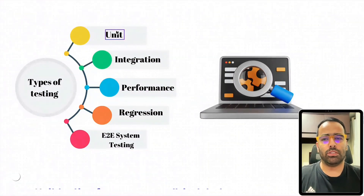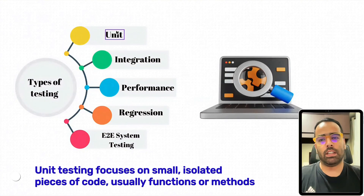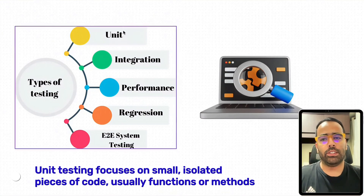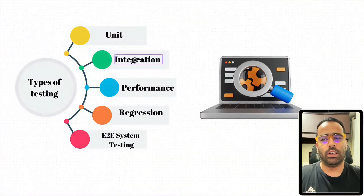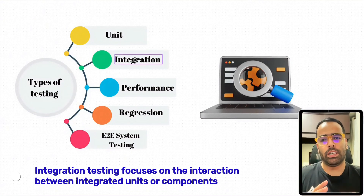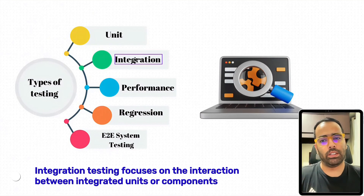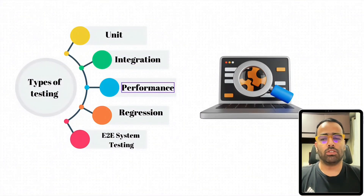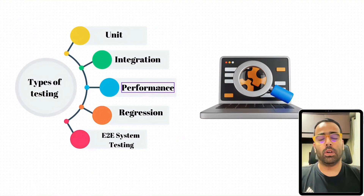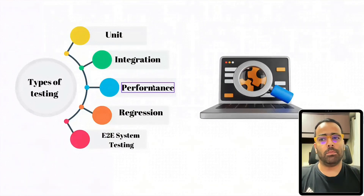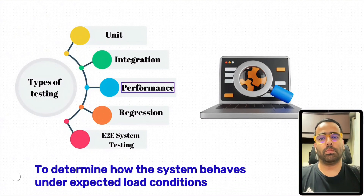The first type is unit testing — testing at the class level or method level, basically the smallest component in your code. Integration testing is when you start combining different modules and test how they work together. The third type is performance testing, which is really important when working on microservices or UI. Users these days don't want to wait more than a few milliseconds — if a user waits more than half a second, you are losing a customer. We also call it load testing.